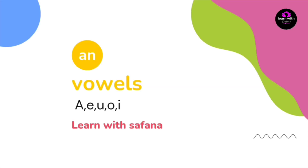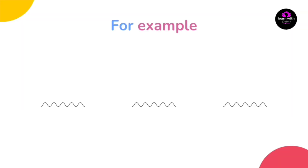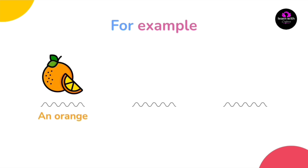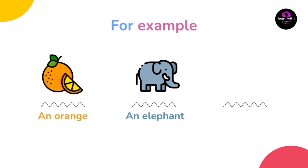الـ 'an' نستعملها مع الـ vowels حروف العلة، اللي هي خمسة: a، e، i، o، u. على سبيل المثال: an orange، an elephant، an ice. ونلاحظ ان الكلمات اللي جات بعد 'an' كانت كلها تبدأ بحروف علة: o، e، i.